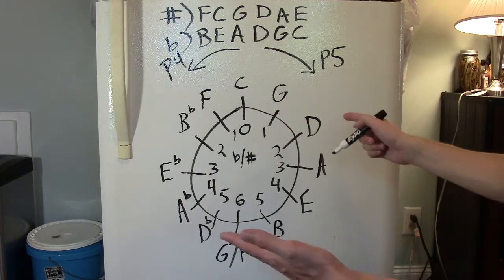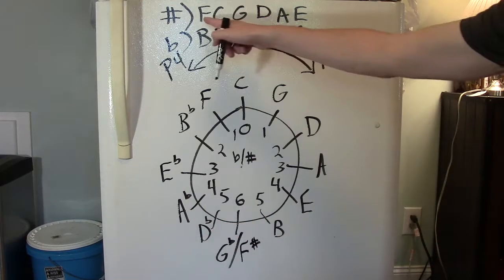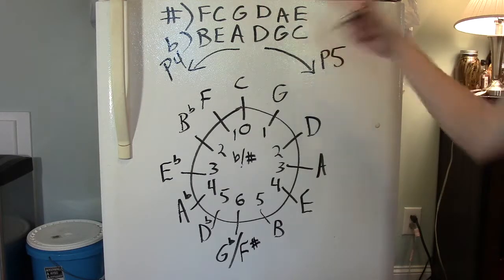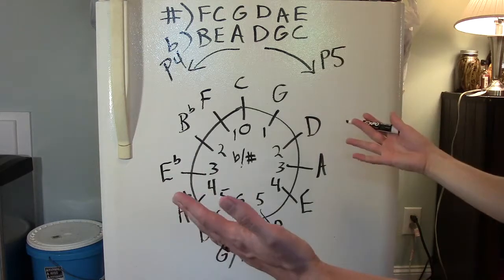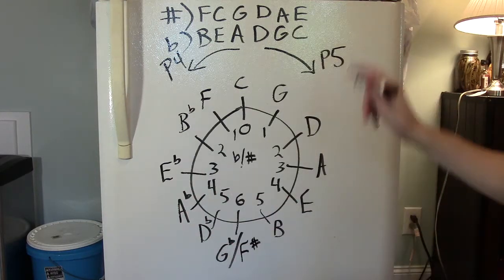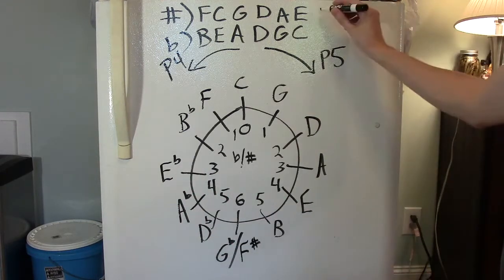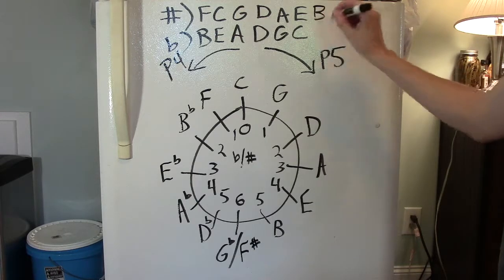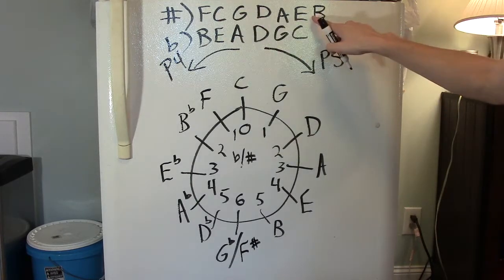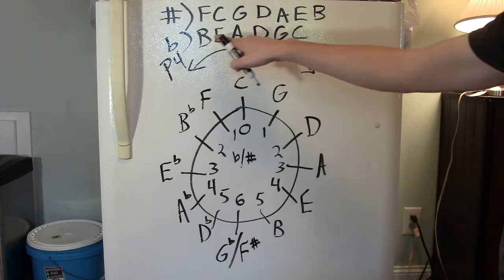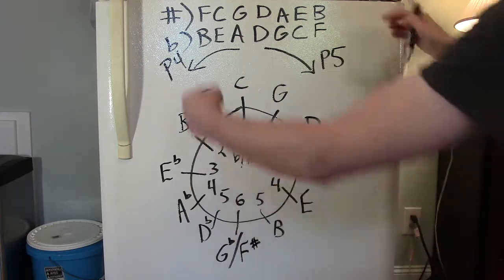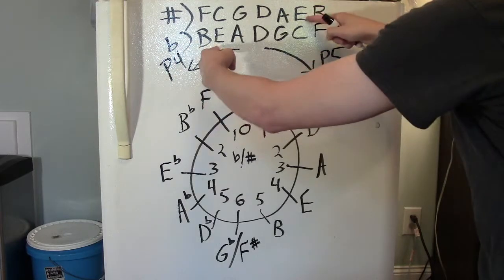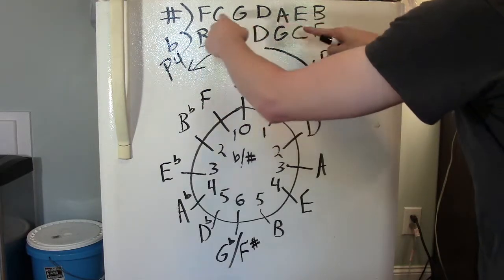Notice that this circle only produced one, two, three, four, five, six sharps and one, two, three, four, five, six flats. I know that there are seven sharps and seven flats. Let's add these in. B is our last sharp. Now let's add our last flat, F. Notice the pattern. The sharps and flats are in inverse order of each other.